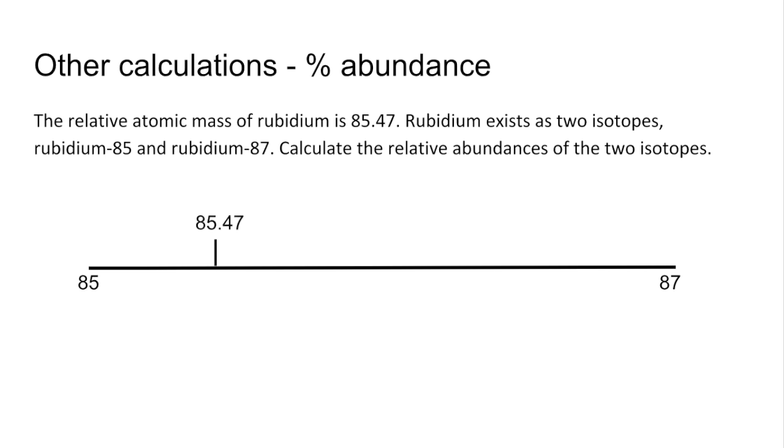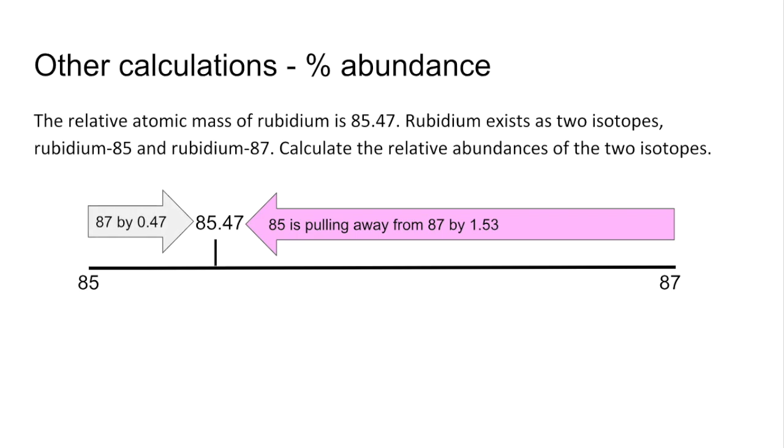The relative atomic mass, so the weighted mean is coming out at 85.47. So here's the tug-of-war bit. So the 85 isotope is pulling away from 87 by 1.53. So if you start there, to get to the average, it's 1.53. That means the 87 is pulling in the opposite direction by 0.47. The difference is 2.